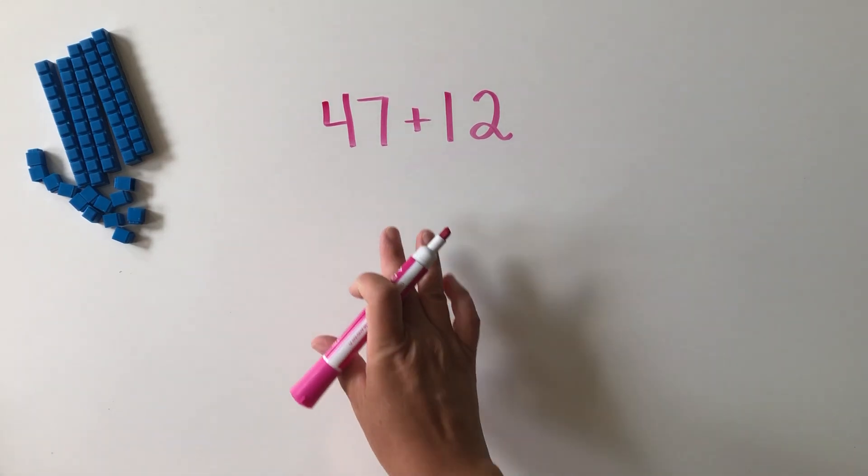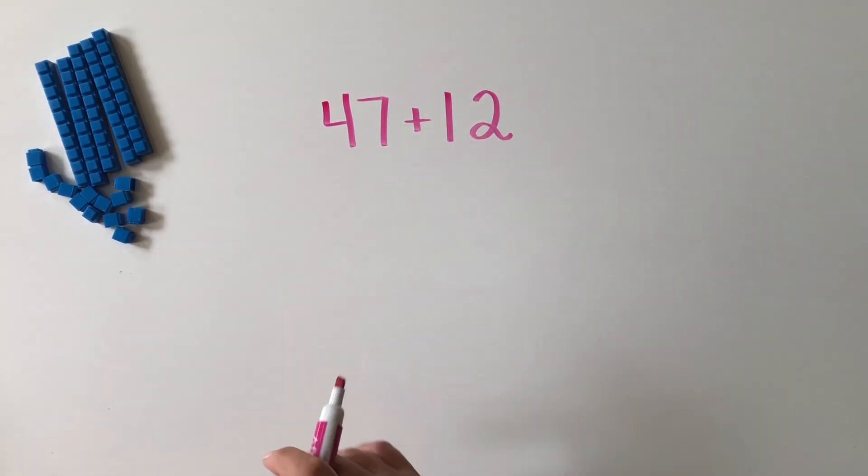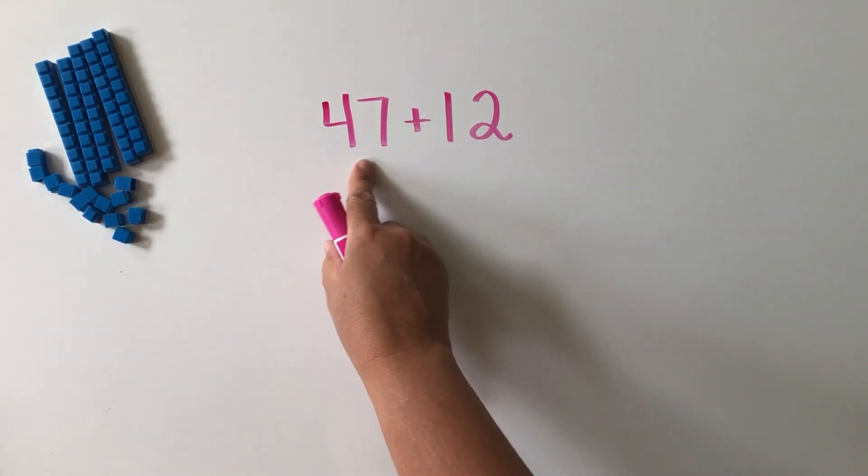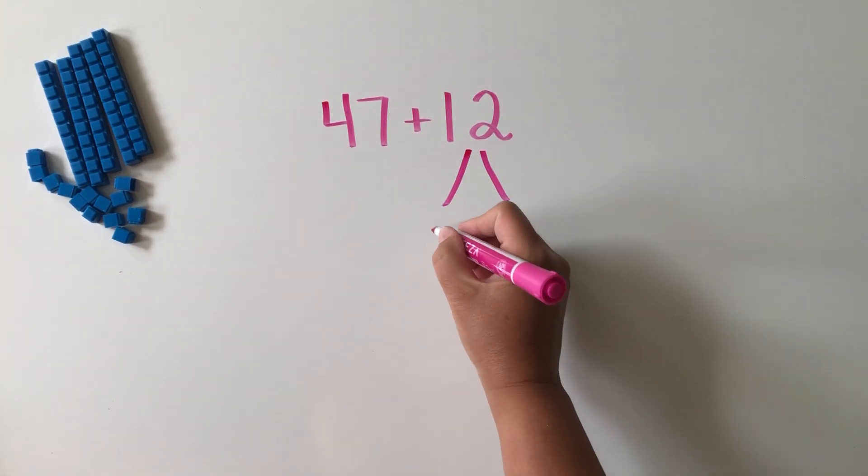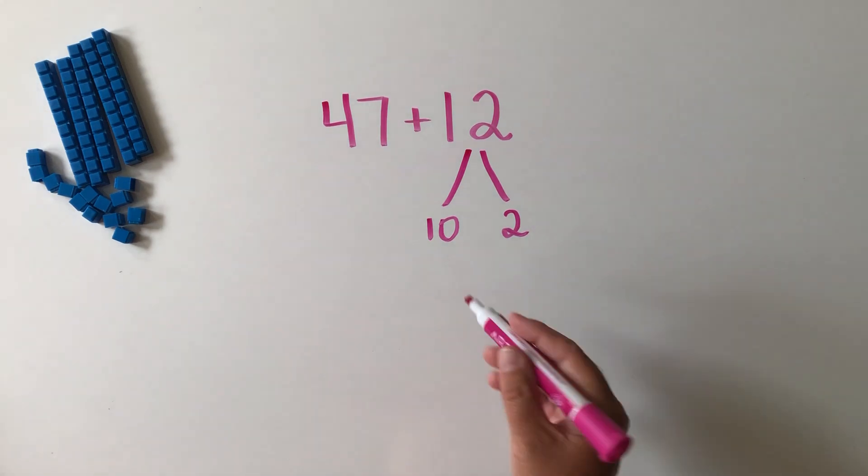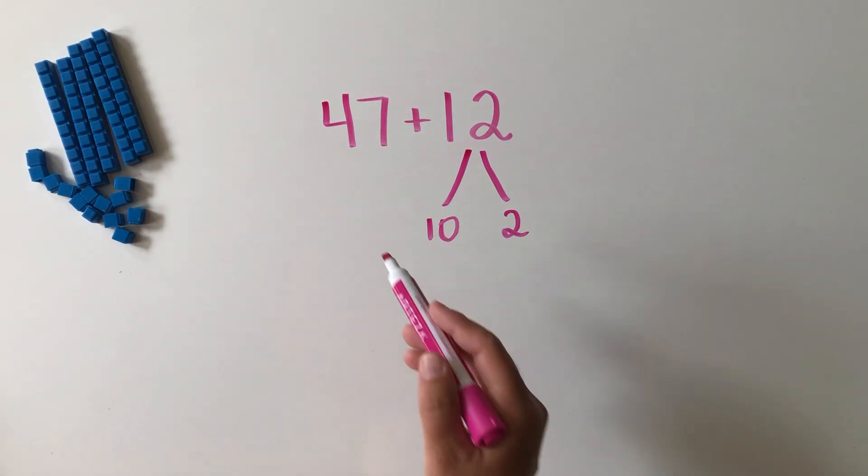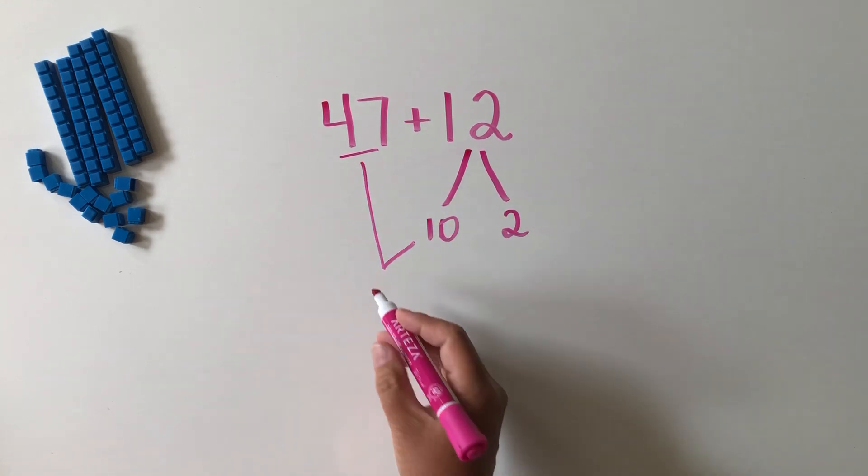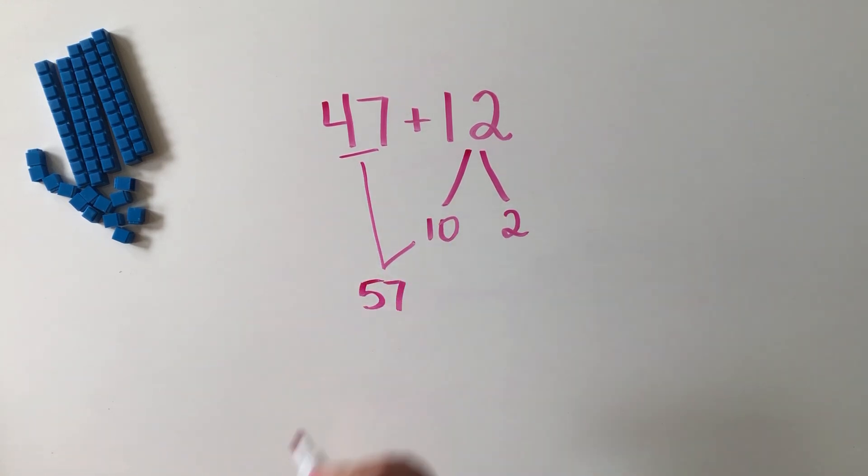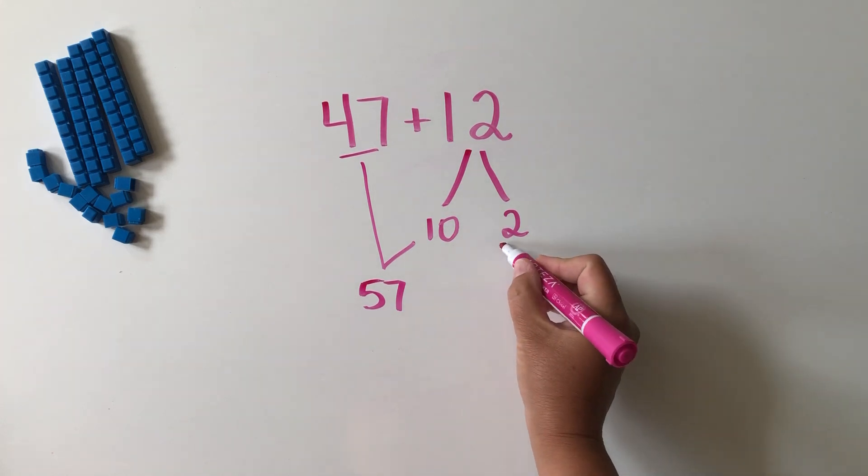What we're going to do is decompose one of the numbers. I'm going to choose the smaller number to decompose because I think it's more efficient to begin with the bigger number. So we're going to take the 12 and decompose it into a 10 and a 2, and then we're going to add in parts. We'll start with 47 and add the 10 first, which gives us 57, and then we'll add the 2, which gives us a sum of 59.